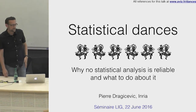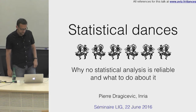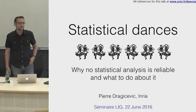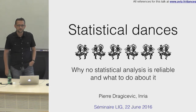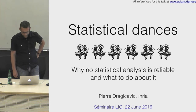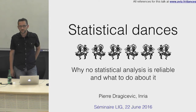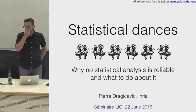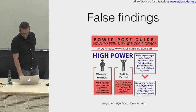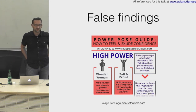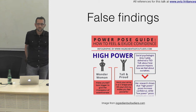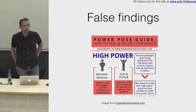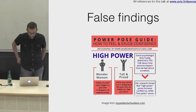Thank you for the introduction and for everyone coming. My talk will be about experiments in behavioral sciences, which include information visualization and human-computer interaction, as well as psychology. More specifically, my talk is about statistical uncertainty — a topic I've been interested in — and how we're not very good at communicating it, and how we can improve, for example by running simple simulations.